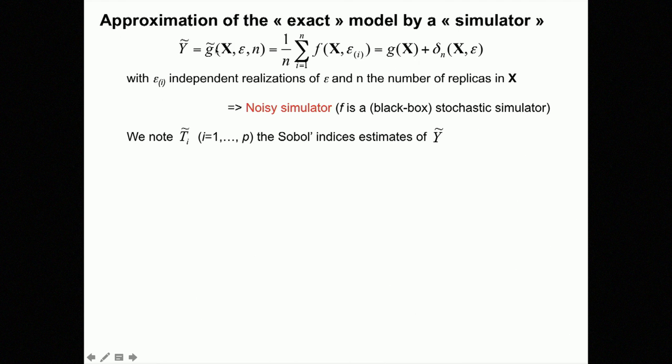Since I don't have access to G, I have to estimate G in my real problems, so I define what I call a simulator: simply the empirical mean — I make small-n independent realizations of F and take the empirical mean to obtain an approximation of G. So I have a small n, the number of runs with F, and there is an error. I have access to G but with an error — I can call this a noisy simulator.